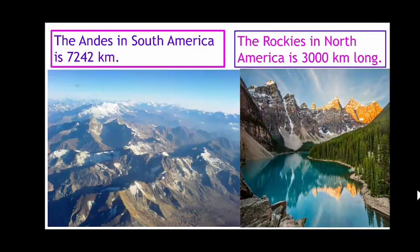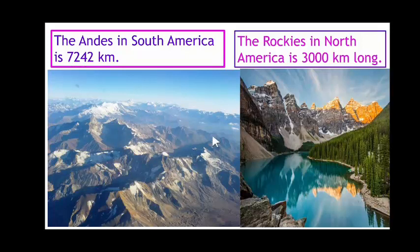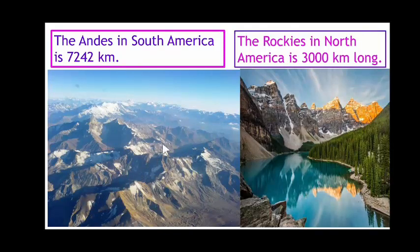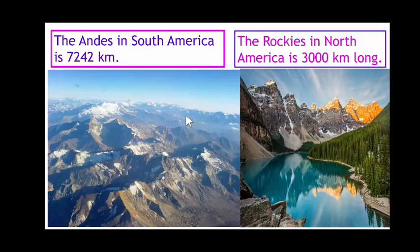Some other important mountains in different parts of the world are the Andes in South America, which is 7,242 km long, with a series of mountain ridges. The Rockies in North America are 3,000 km long. These are the different types of mountain ridges in other parts of the world.